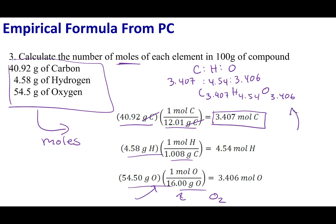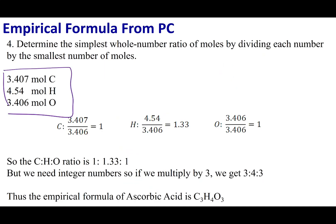This is going to make Dalton very unhappy. We have fractional atoms, and Dalton said we cannot break an atom — there's no such thing as a 0.407 atom. So I need to get whole numbers. The way we do that is to look at the lowest number we have, then divide everything by that number of moles. Dividing 3.407 by 3.406 gives about 1. Dividing 4.54 by 3.406 gives about 1.33. And anything divided by itself is 1.